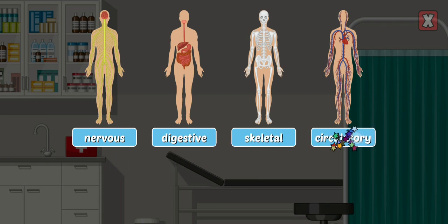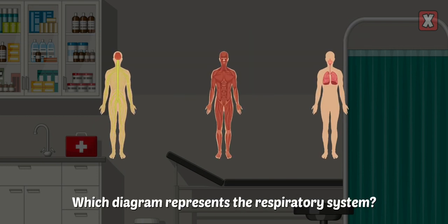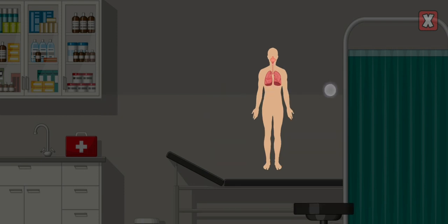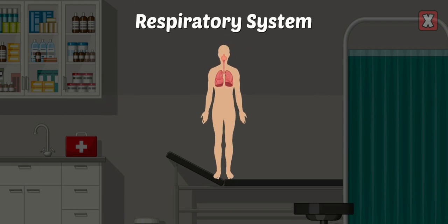Circulatory System — the circulatory system moves blood around the body and consists of the heart and all blood vessels. Which diagram represents the respiratory system? The respiratory system is responsible for taking in oxygen and releasing carbon dioxide.